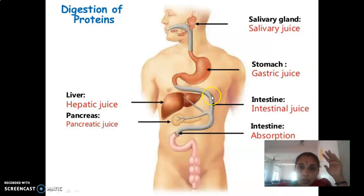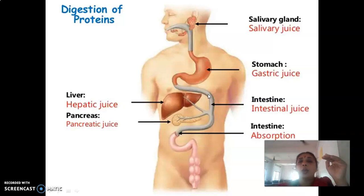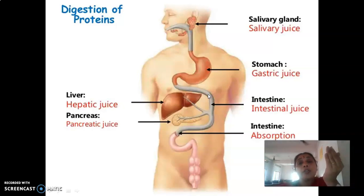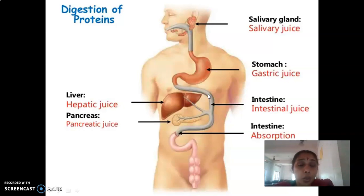As we descend down the intestinal lumen, the alkalinity increases, so more and more trypsinogen is converted into trypsin. Only very few quantities of enteropeptidase are released, converting small quantities of trypsinogen to trypsin. That trypsin then causes the conversion of more and more trypsinogen molecules into trypsin.